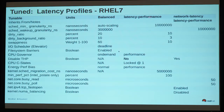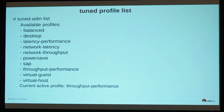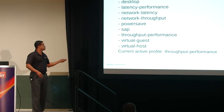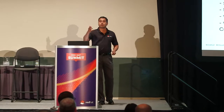We also have a latency-performance profile meant for low-latency applications, and a network-latency profile that inherits from it and adds a few parameters. Since RHEL 7 is a cloud operating system, we created profiles for virtual-host and virtual-guest, both inheriting from throughput-performance. More ISVs are getting on board — they realize their applications require certain kernel parameters and are contributing TuneD profiles to the open source project. We hope more people sign on to create profiles so you can just apply one when you want to run SAP, for example.